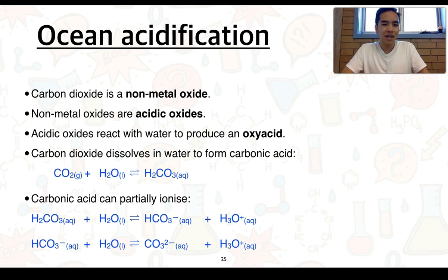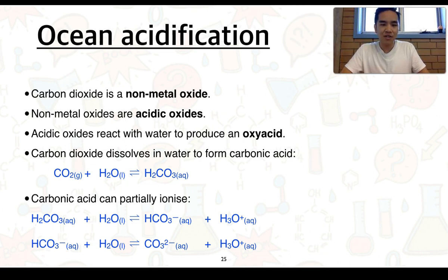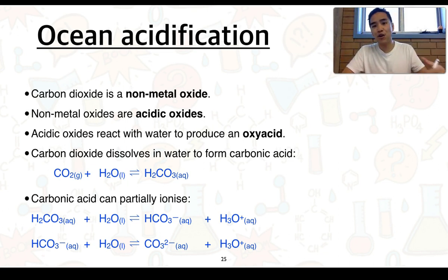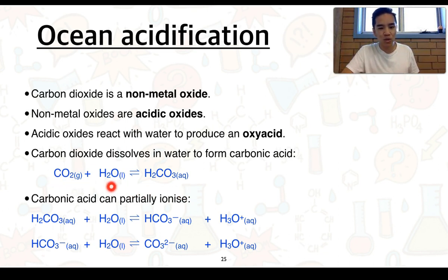So what exactly is ocean acidification? We know it links into carbon dioxide emissions. Carbon dioxide is a non-metal oxide — that's because it's made up of non-metals. Non-metal oxides we classify as acidic oxides. We know that non-metal oxides or acidic oxides can react with water and produce acids, which we call oxyacids. So carbon dioxide can dissolve or react with water and form an acid known as carbonic acid. The balanced chemical equation shows CO2 as a gas reacting with water to produce H2CO3 as an aqueous solution.